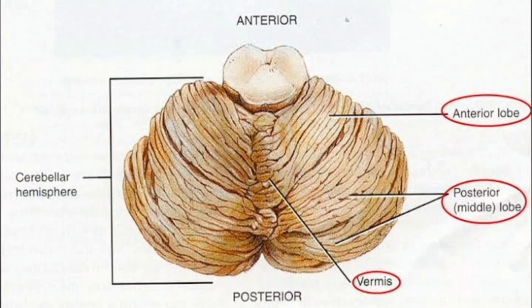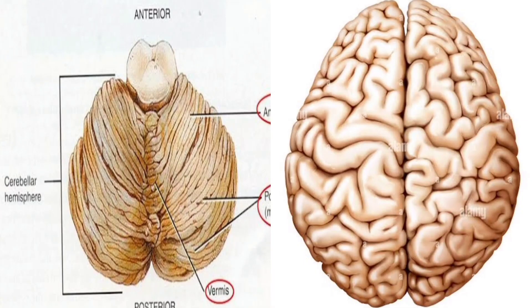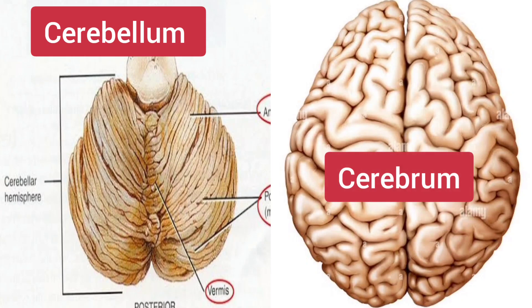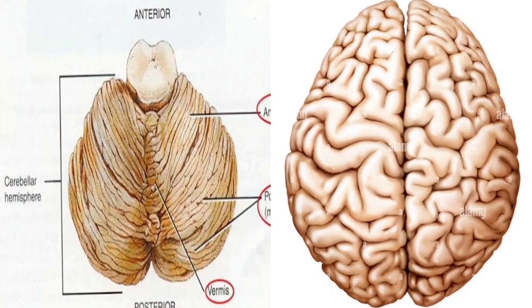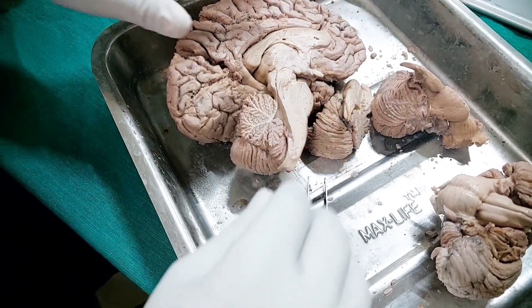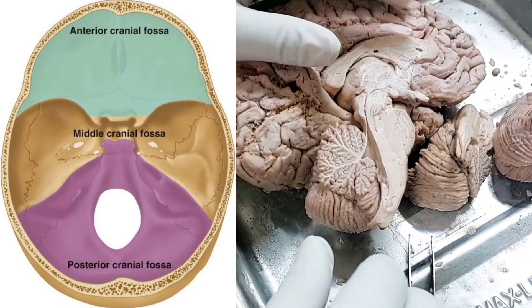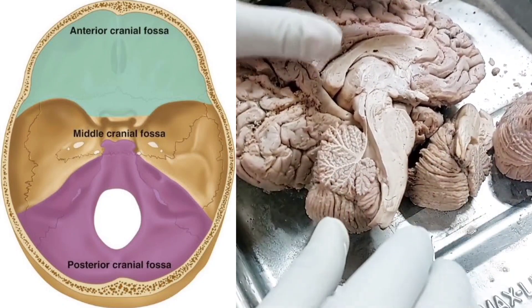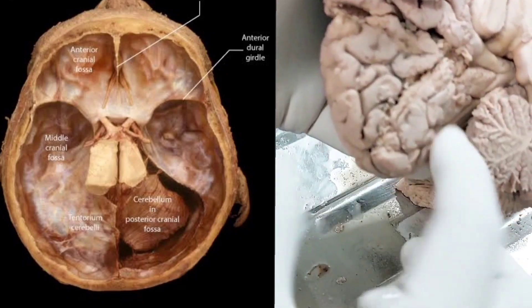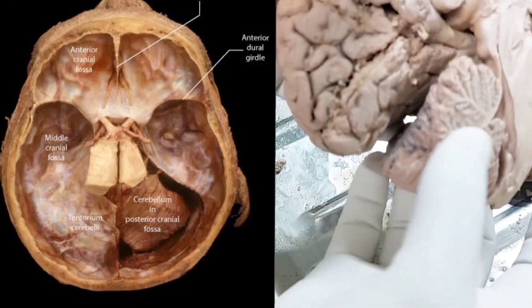Another important part of the brain is the cerebellum. The cerebellum is not like the cerebrum in many ways — it is about a 1 to 10 ratio, meaning the cerebellum is one-tenth of the cerebrum by weight. It is situated in the posterior cranial fossa, below the occipital lobe. This is the occipital lobe, and this is the cerebellum.